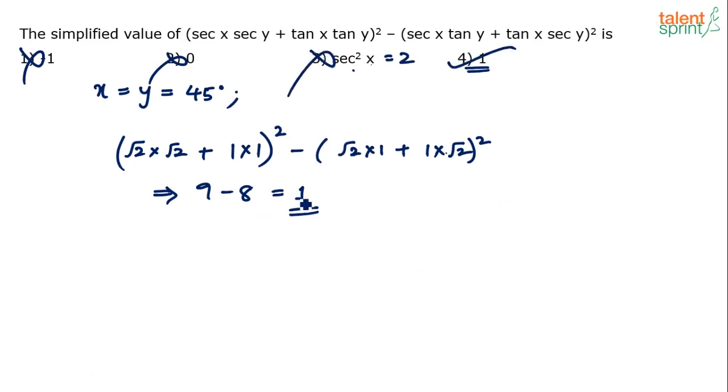So don't blindly mark option 4 as the answer just because you have got 1. Verify by substituting the values of x and y in the options as well. Options 1 and 2 directly get eliminated because these are numerically -1 and 0, which are not equal to 1. But option 3 cannot be neglected directly. Anyway, option 4 (which is 1) is the final answer.